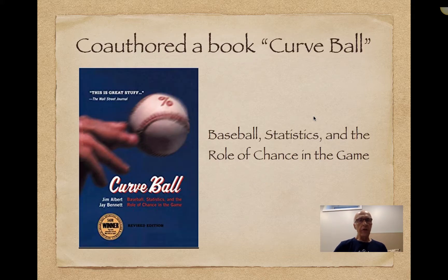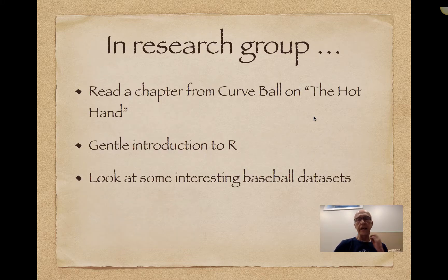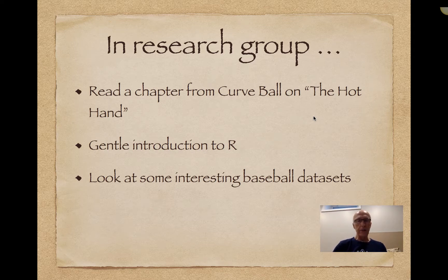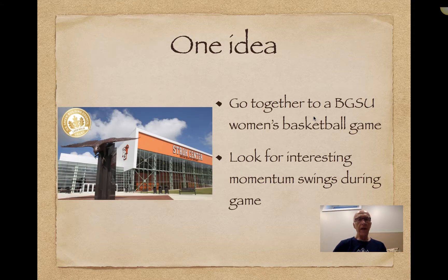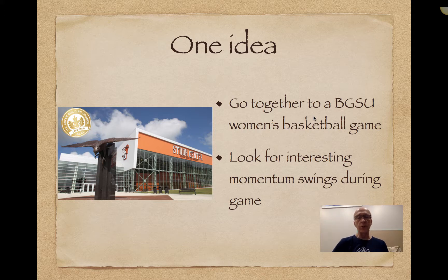I wrote a book with Jay Bennett called Curveball: Baseball Statistics and the Role of Chance in the Game. We'll be reading a chapter from this book that's focused on the hot hand. We'll also very gently get introduced to R and look at some interesting baseball data sets, then probably move on to other sports. One thing we can do is go together to a BGSU women's basketball game in the fall or spring and look for some interesting momentum swings during the game.